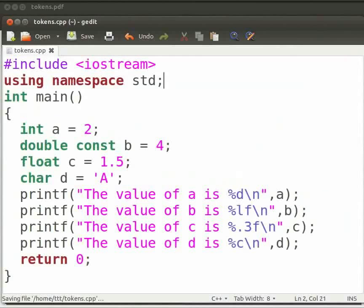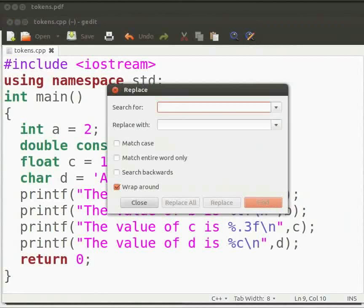Now, replace the printf statement with the cout statement, since we use the cout function to print a line in C++. Click on search for and replace text option. Type here printf opening parenthesis, and here in this column type cout and two opening angle brackets. Now, click on replace all and click on close.